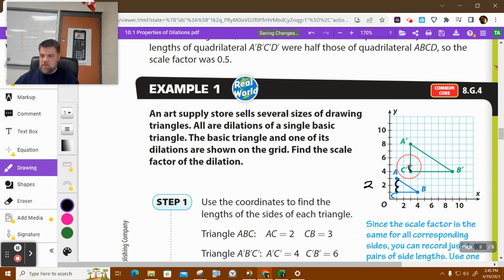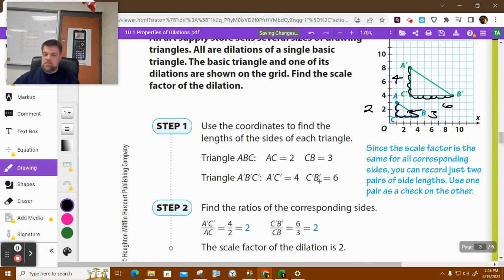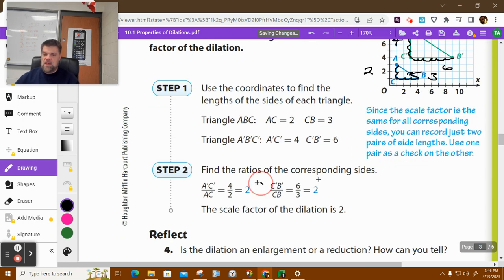And the count from here, it's 1, 2, 3, 4, right? And then from C to B, it's 1, 2, 3. And what do you think this is? 1, 2, 3, 4, 5, 6. So when you look at that, if you compare it, it's 2. So the scale factor is a dilation of 2.